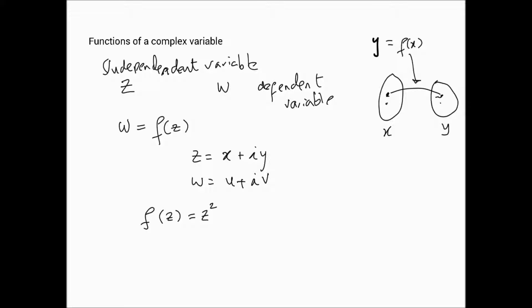In fact, one cannot draw an argand diagram anymore. You need to have two diagrams, one representing the independent variable, and so it's a graph for x plus iy, in other words, for z. And then there's a different graph for w.